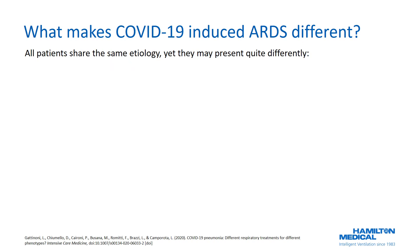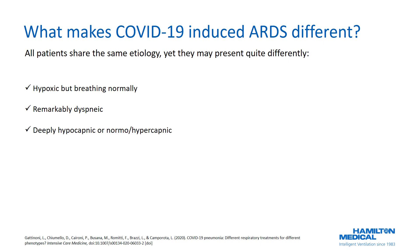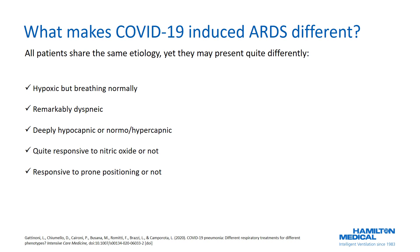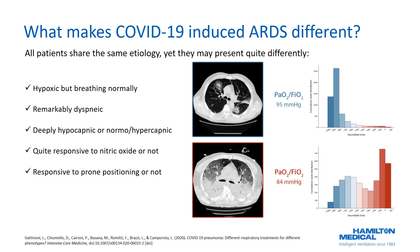The second observation noticed by Gattinoni and his colleagues is that even though those patients share the same etiology, they might present with quite variable characteristics. You might have patients who are hypoxic but normally breathing, patients who are remarkably dyspneic, patients who are deeply hypoxic, those who are normocapnic and those who are hypercapnic, those who are quite responsive to nitric oxide and those who are not, and those who are responsive to prone positioning and those who are not.